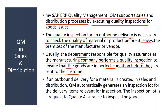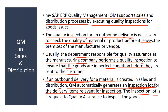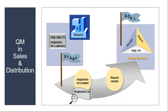If an outbound delivery for a material is created in Sales and Distribution, QM automatically generates an inspection lot for the delivery items relevant for inspection. So if you make the appropriate settings in the system, when the sales people generate an outbound delivery, the system will automatically generate an inspection lot. The inspection lot is a request for quality assurance to inspect the goods, and using that inspection lot they will do the quality check.